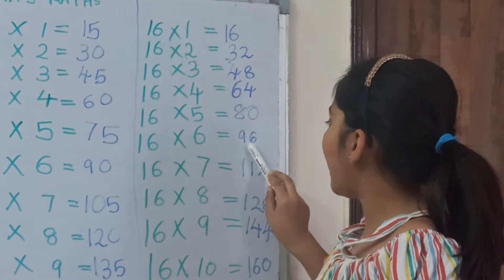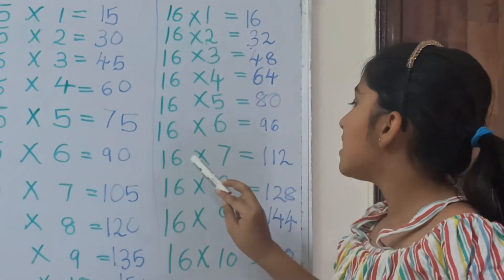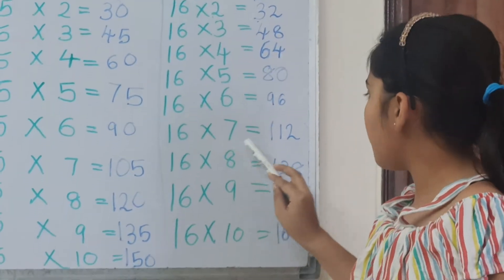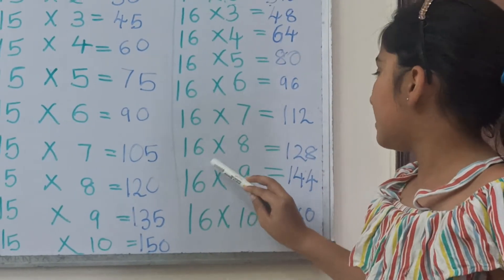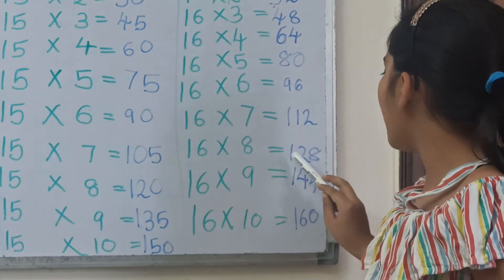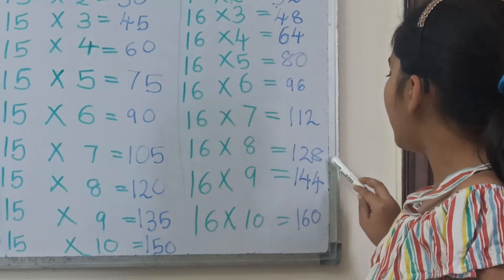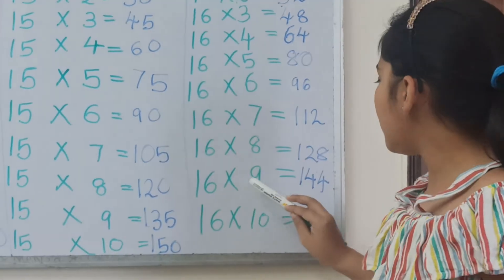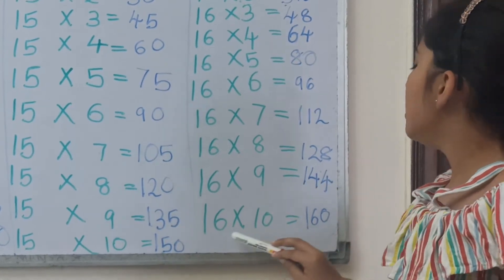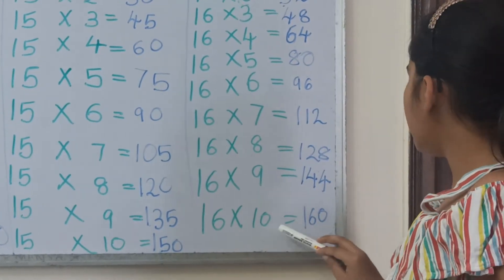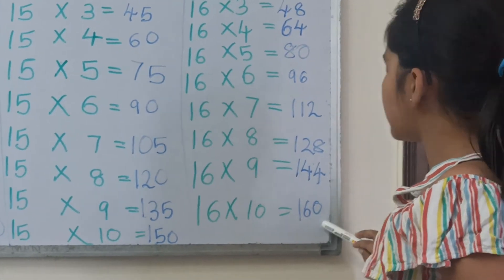16 6's are 96, 16 7's are 112, 16 8's are 128, 16 9's are 144, 16 10's are 160.